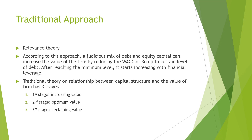If we have a judicious mix of debt and equity capital, we can minimize the overall cost of capital and maximize the value of the firm. The theory on the relationship between capital structure and value of the firm has three stages: first, increasing stage — increasing value; second, optimum value; then, declining value. This is the compromise or traditional approach, which is intermediate between the net income and net operating income approaches.